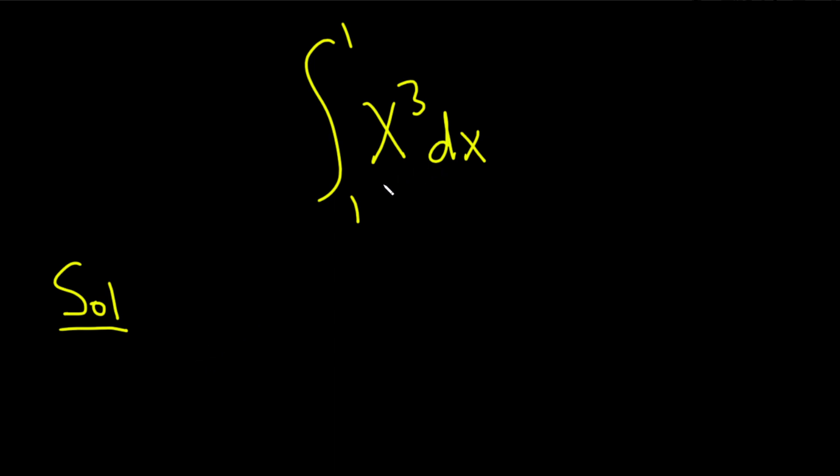So to do this problem we are going to start by using what's called the power rule. The power rule says that whenever you have x to a power you just add 1 to the exponent and divide. You can always do this as long as x is not negative 1.